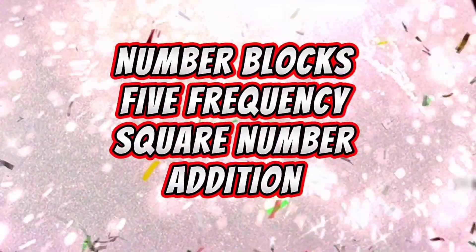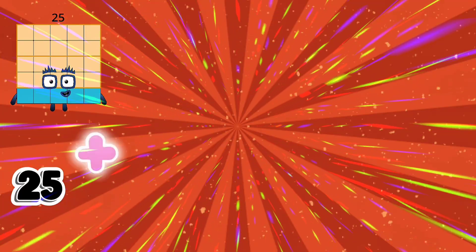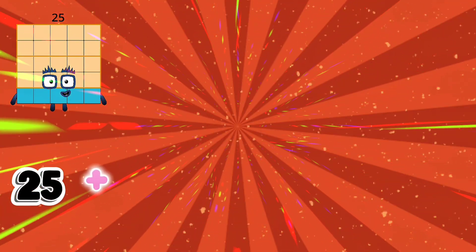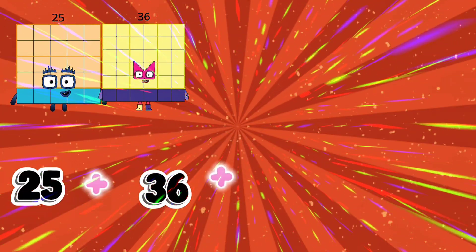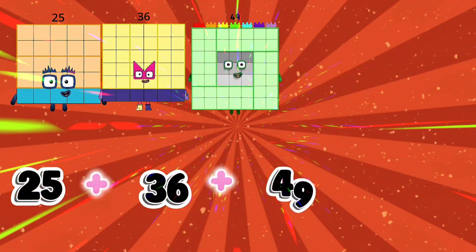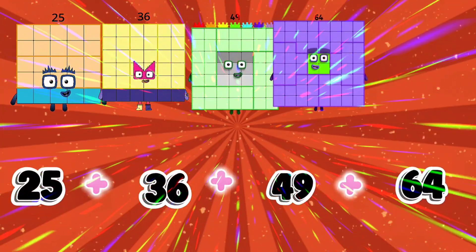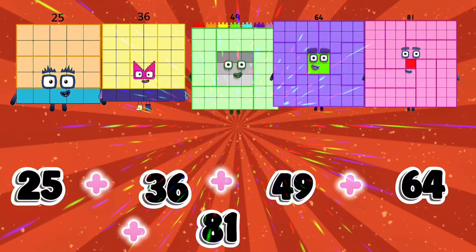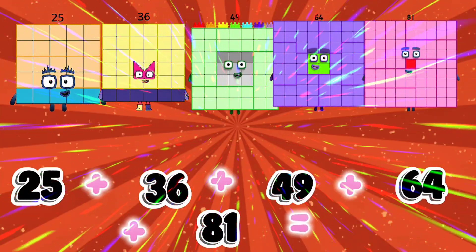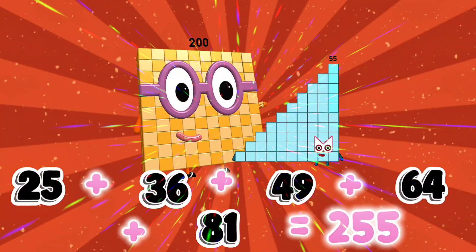Number blocks: frequency square number addition. 25 plus 36 plus 49 plus 64 plus 81 is equal to 255.